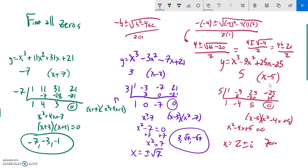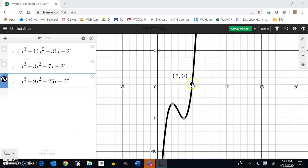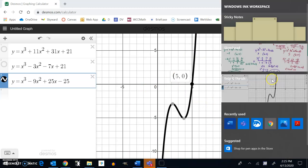My zeros for this are five, two plus i, and two minus i. Now these are complex. These have this imaginary component. So that means that they are zeros. In other words, if I plug two plus i into this for x, this would evaluate to zero, but they're not x-intercepts. They're imaginary. Every number that's on this graph is real. There are no imaginary numbers here.